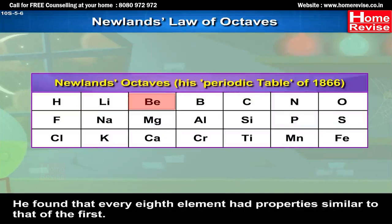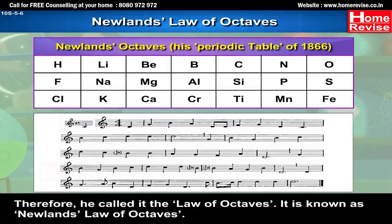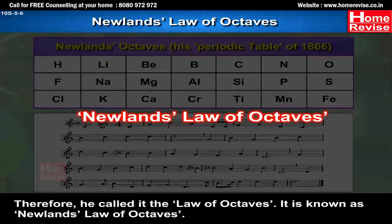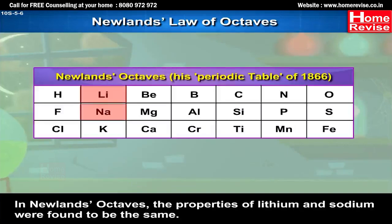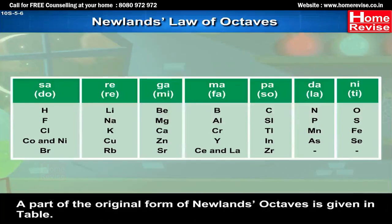Newlands found that every 8th element had properties similar to that of the first. He compared this to the octaves found in music, and therefore called it the Law of Octaves — known as Newland's Law of Octaves. In Newland's Octaves, the properties of lithium and sodium were found to be the same; sodium is the 8th element after lithium. Similarly, beryllium and magnesium resemble each other. A part of the original form of Newland's Octaves is given in the table.